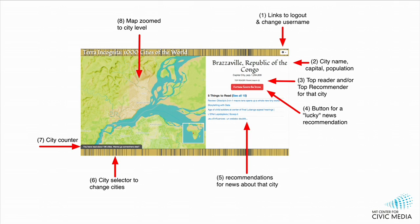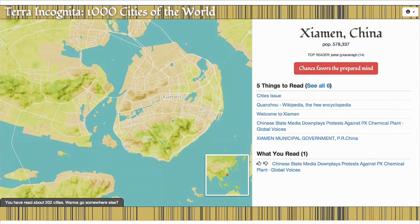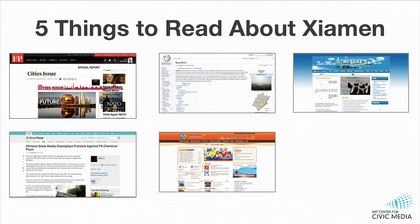Here's a quick tour of the user interface. The main components show you a city that you have not yet ever read about, with options for interaction — the equivalent of the I'm Feeling Lucky button, and options for scanning news headlines and recommendations. For the city of Xiamen, China, there are five things to read: articles from Foreign Policy, articles from Wikipedia, two government websites, and an article from Global Voices about protesters.